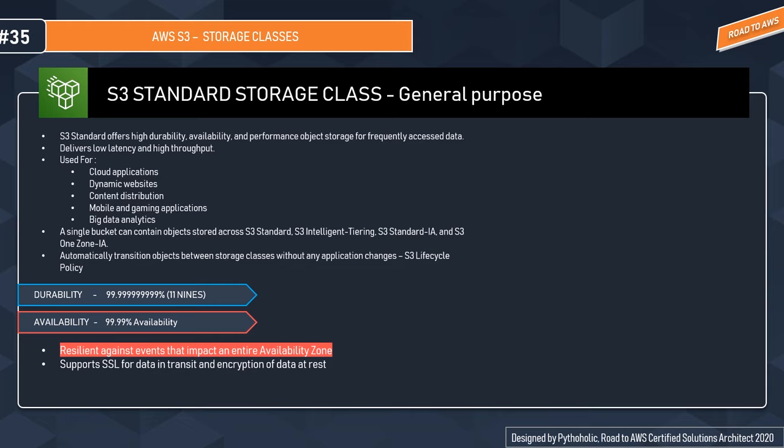A single bucket can contain objects stored across S3 Standard, S3 Intelligent Tiering, S3 Standard IA, and S3 One Zone IA. With lifecycle policies, you can automatically transition objects between storage classes without any application change. For example, if you store data in S3 Standard with a lifecycle policy set to 30 days to move to S3 Standard IA, it will automatically transition when it reaches 30 days.